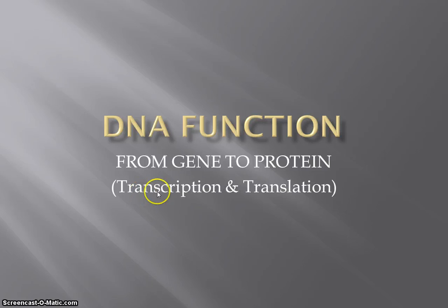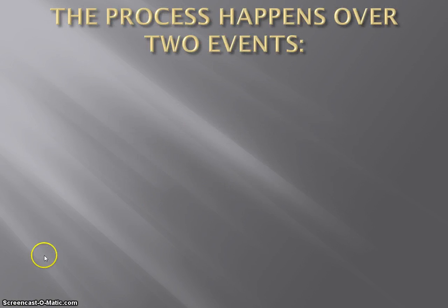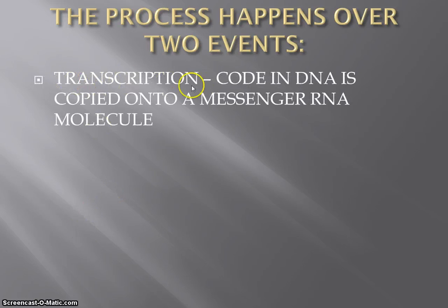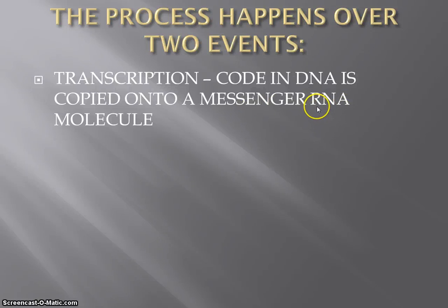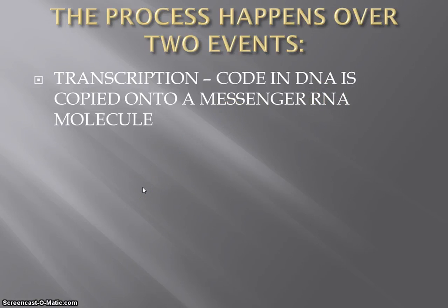We're going to focus today, with this video, just on transcription — part one. So when we say it's a two-part series of events, a two-part play, the first part we're going to focus on is transcription. Scribe or scription just means to write or to copy. So in this process, it's pretty simple — it's going to be very much like DNA replication, but not the same. We're going to take that code that's hidden in DNA and copy it onto a different molecule called messenger RNA. That's not DNA — that's like a cousin of DNA. RNA stands for ribonucleic acid. The fact that it's called messenger RNA is a nice name because this molecule's job is just going to be to carry a message, delivering a message from one place to another.